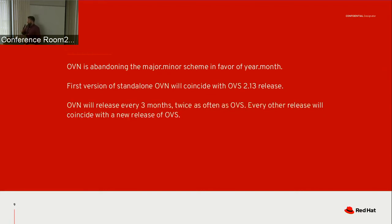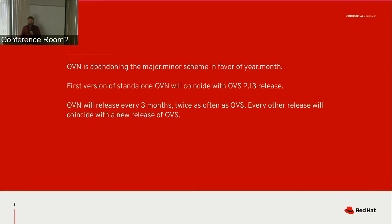We're also changing how OVN is going to be versioned. We realize there could be a lot of confusion if we come out with our first version of OVN as 2.13 and then start releasing similarly numbered versions for OVS, because people will assume the OVN version corresponds with the OVS version, and that's not always going to be the case. So rather than using a major.minor version scheme, we're going with a DPDK-ish or Ubuntu-ish scheme of year.month. Our first OVN release will coincide with the OVS 2.13 release, which will be around February or March, so that would be something like 2020.03.